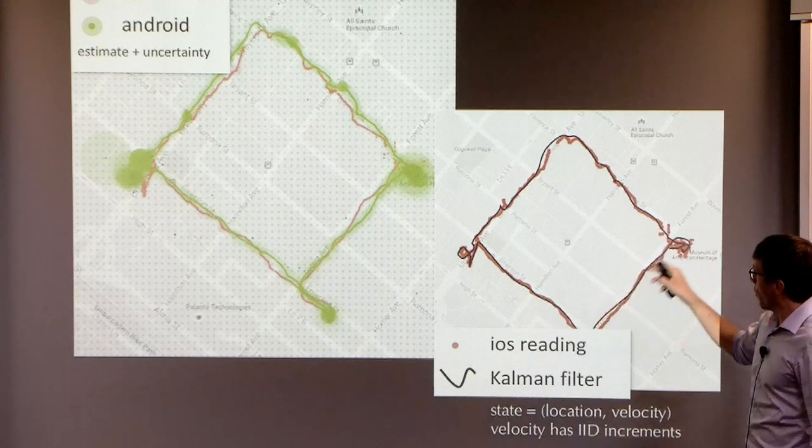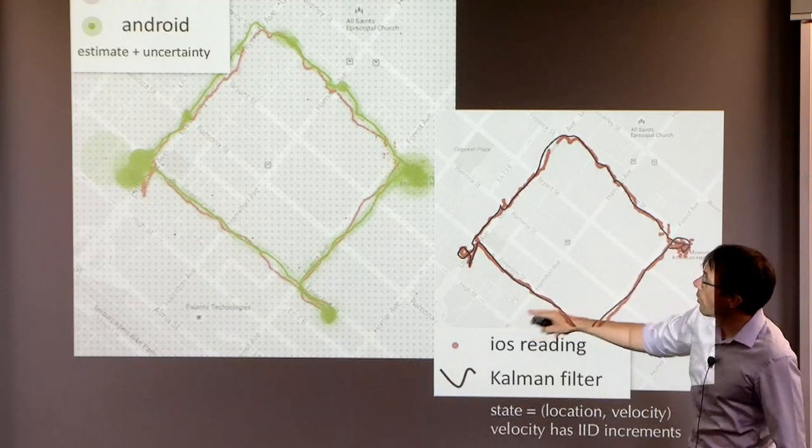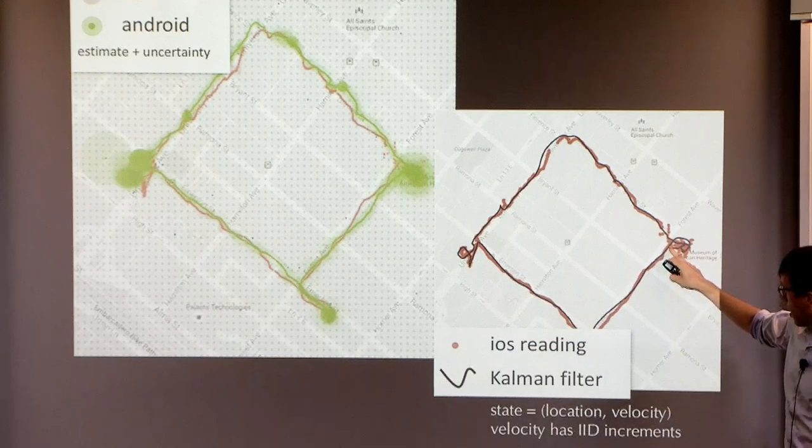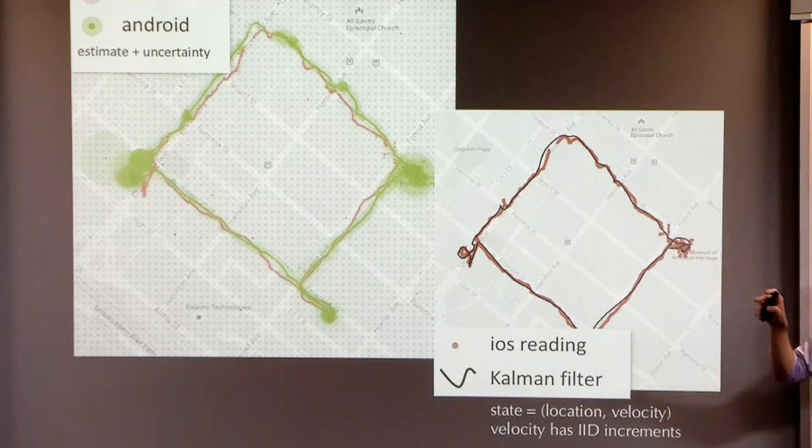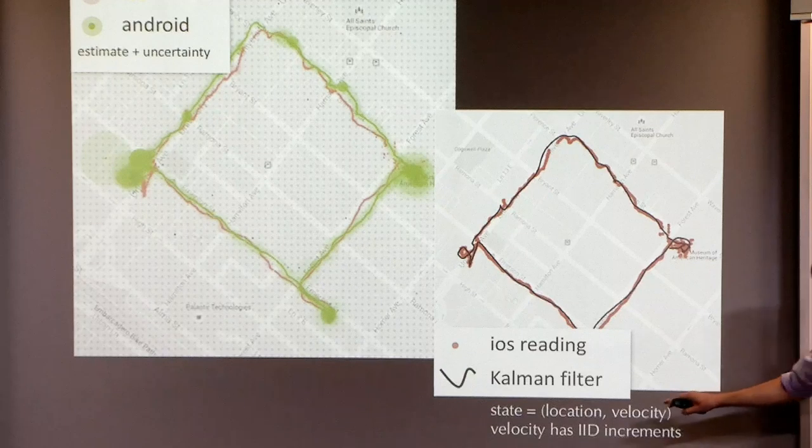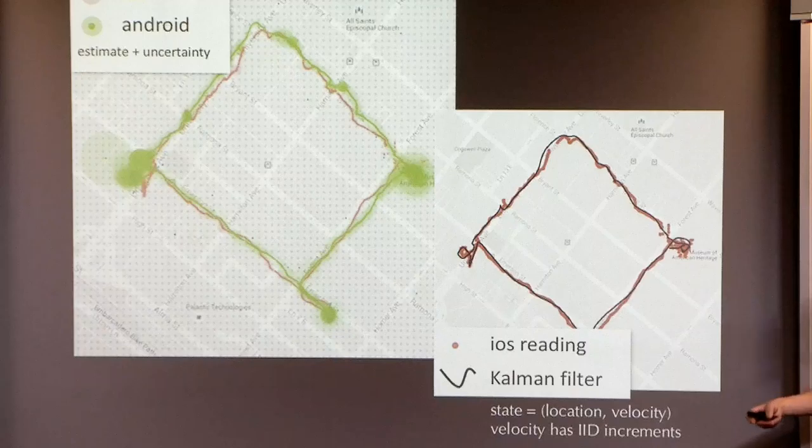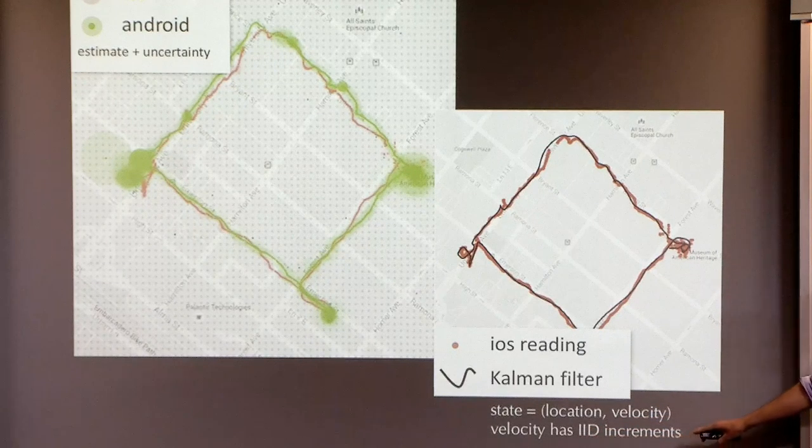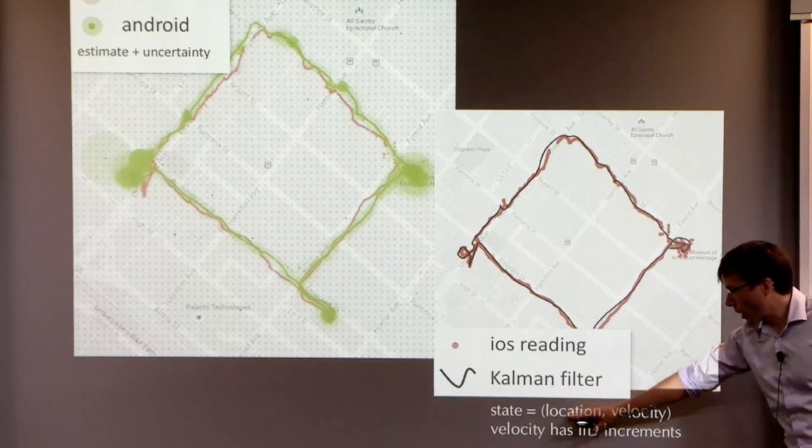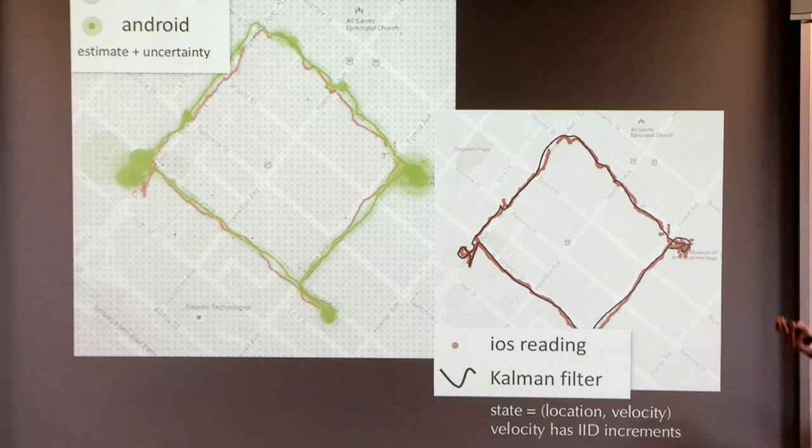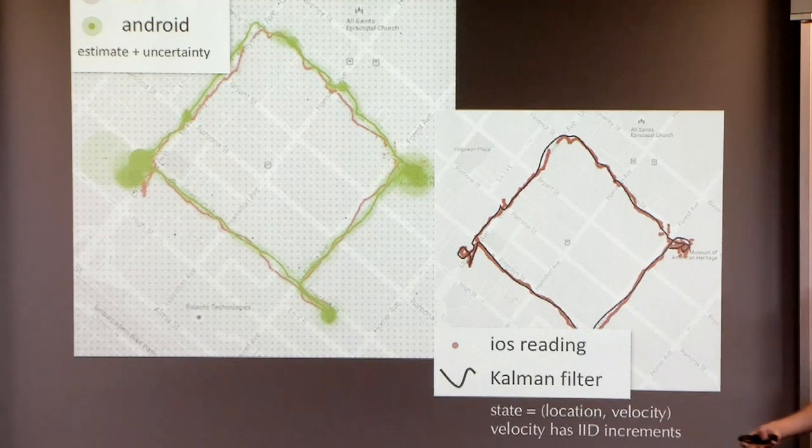I did some experiments. My best guess for what this is doing, what I'm showing here, the iOS reading is in red again. And on top of that, I did a Kalman filter, and I did a Kalman filter in which the state which you're updating is location comma velocity. And for my Kalman filter, I assume that the velocity has IID increments. So I tried a variety of different Kalman filters.